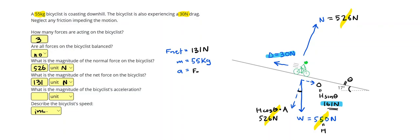Finally, to get my acceleration, I can do net force divided by mass and that gives me 2.38. And those units will be meters per second squared.